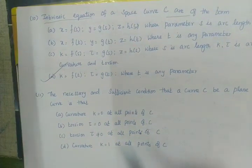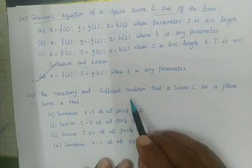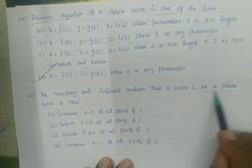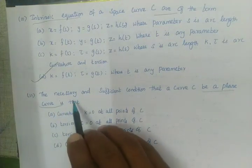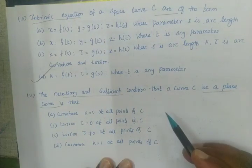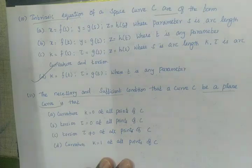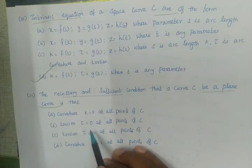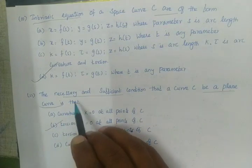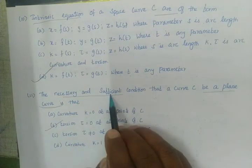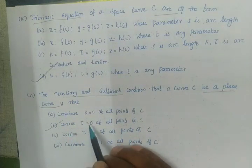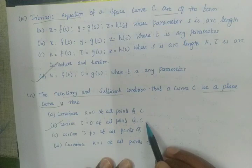The necessary and sufficient condition for a curve C to be a plane curve is that at all points of C, the torsion equals zero. Option B is the correct option — the necessary and sufficient condition for the curve to be a plane curve.